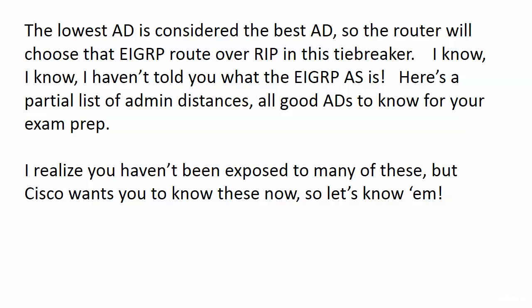As far as all these other ADs go, the lowest AD is considered the best AD. The lower the administrative distance, the more believable the source of the route. So in this case, the router is going to choose that EIGRP route over RIP in the tiebreaker. I'm going to show you an entire table of ADs, and you'll see exactly what I mean about EIGRP. They're all good ADs to know for your exam prep.